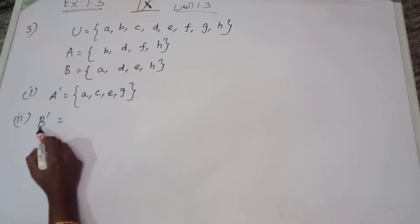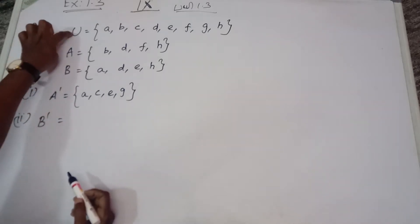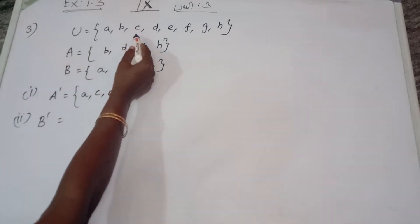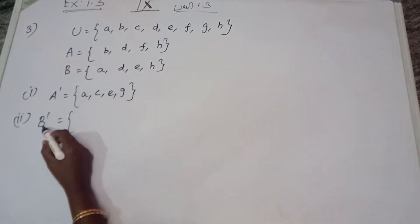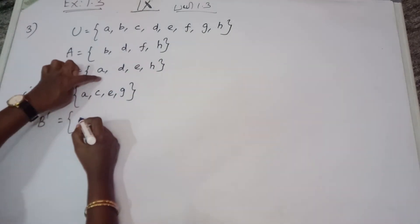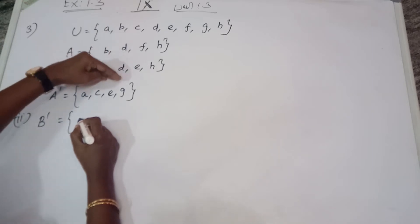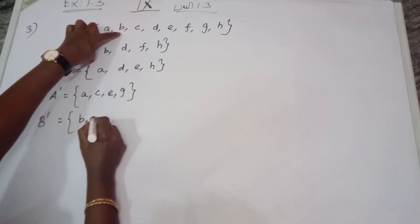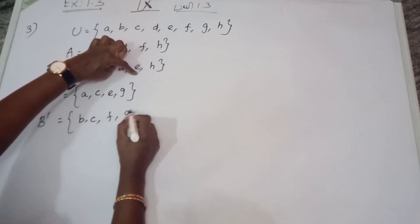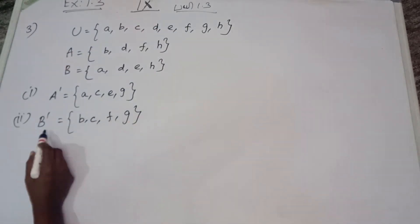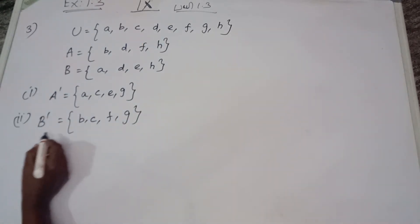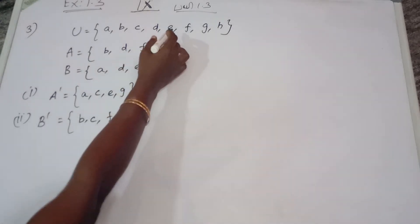B dash (B') — the element which is not in B but in U, the universal set. Not in B but in universal set. So these elements are not in B but in U, the universal set.